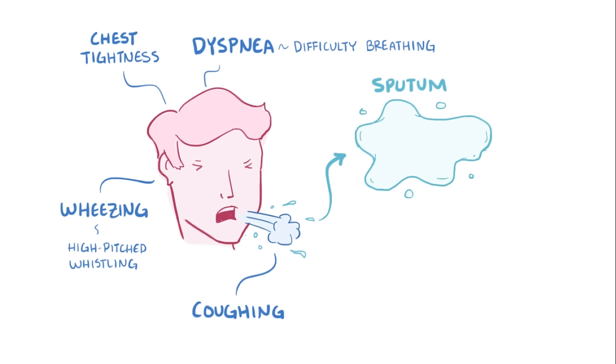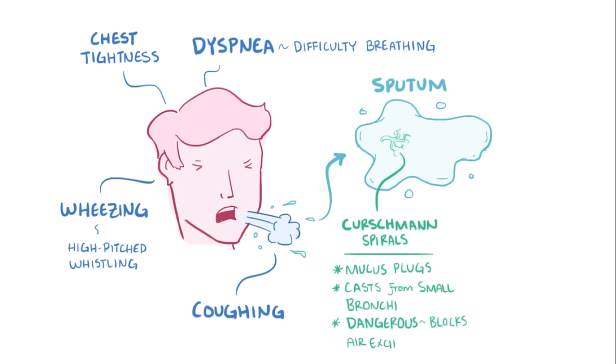Occasionally in the sputum there might be Kirschmann spirals, which are spiral-shaped mucus plugs or basically elongated mucus casts from the small bronchi of people with bronchial asthma. Mucus plugs can be particularly dangerous because they not only block exchange of air, but they also block inhaled medications from getting to the site of inflammation.